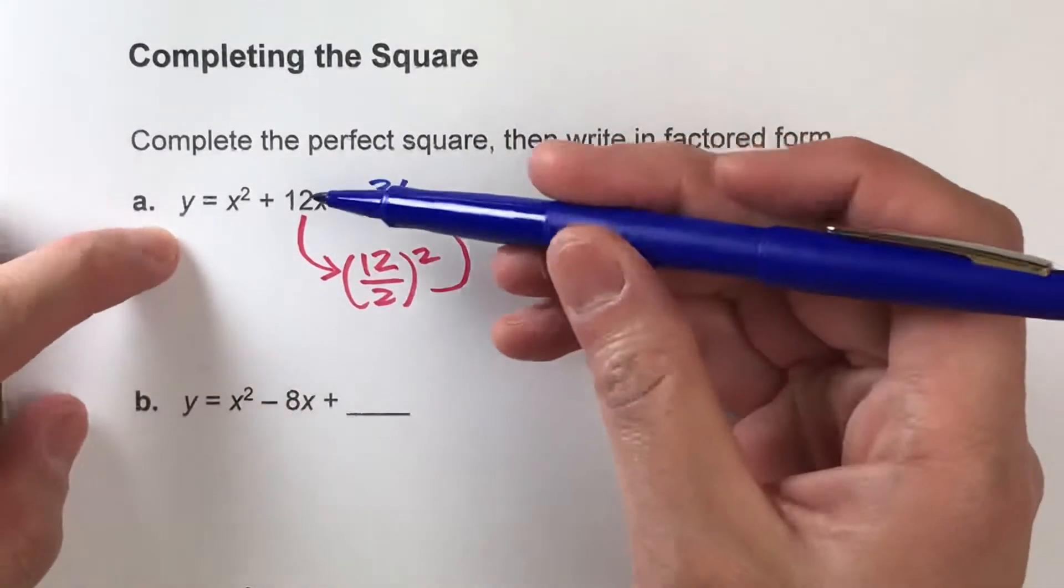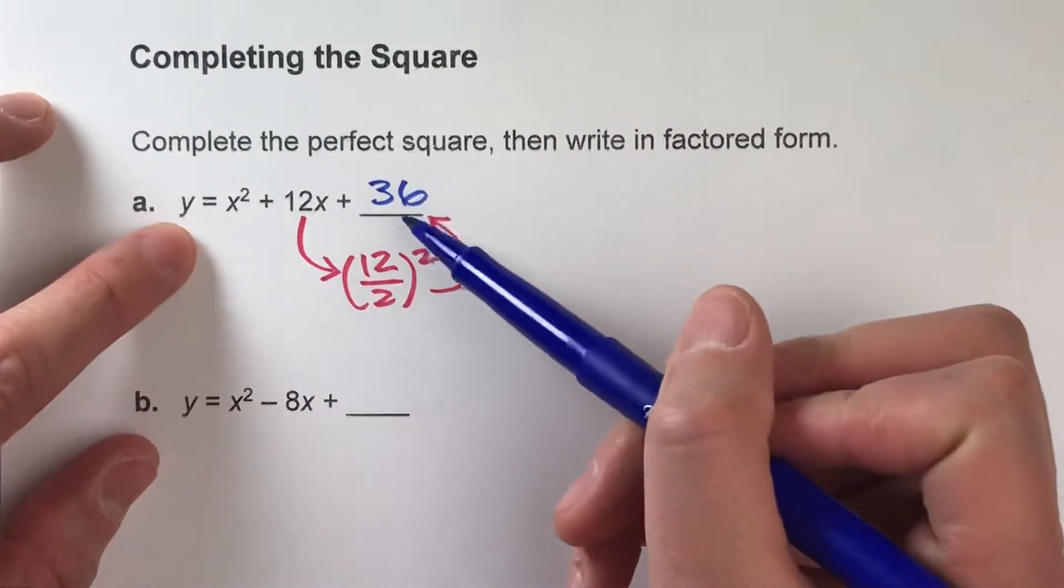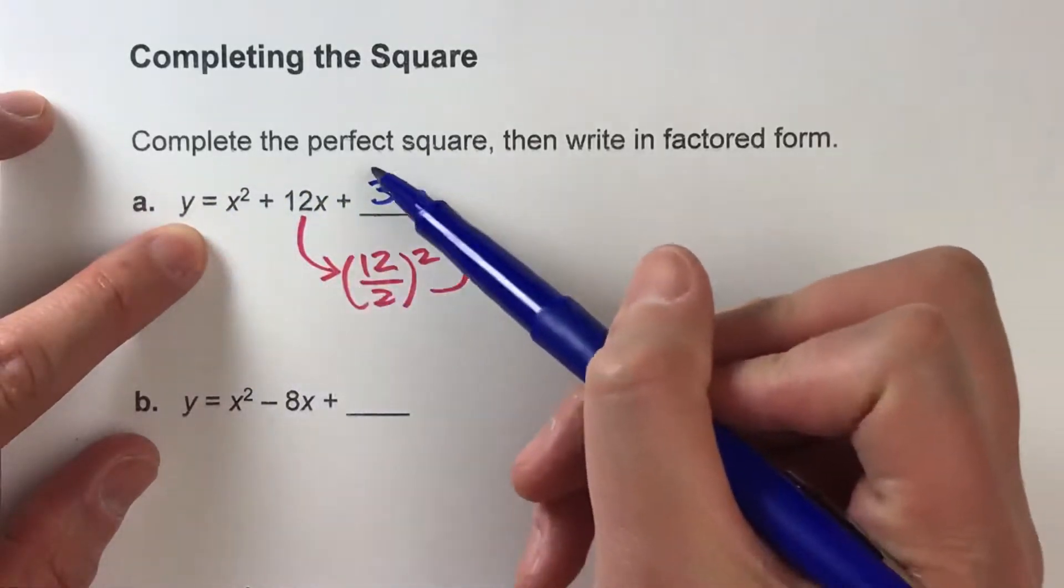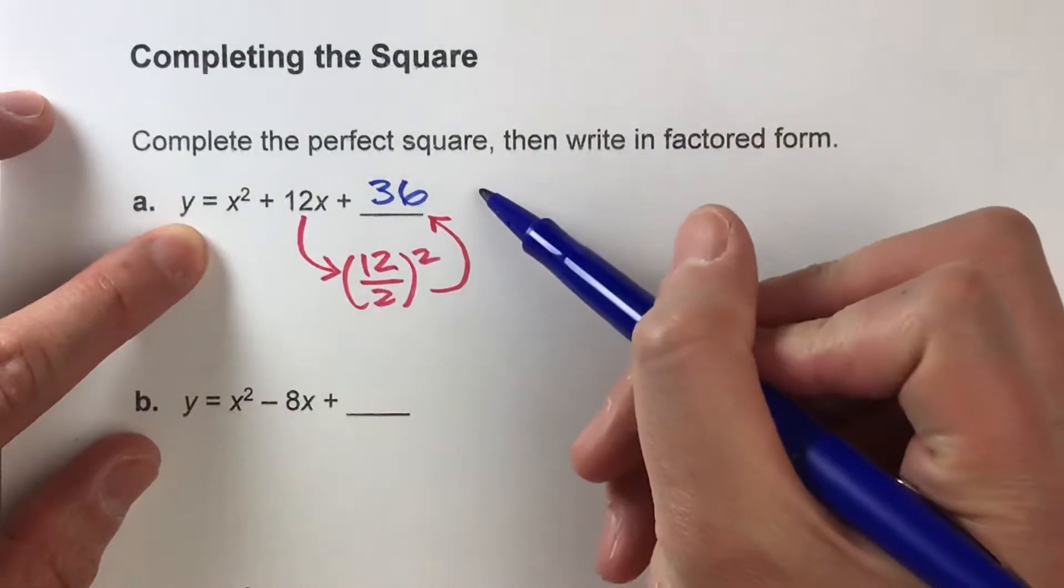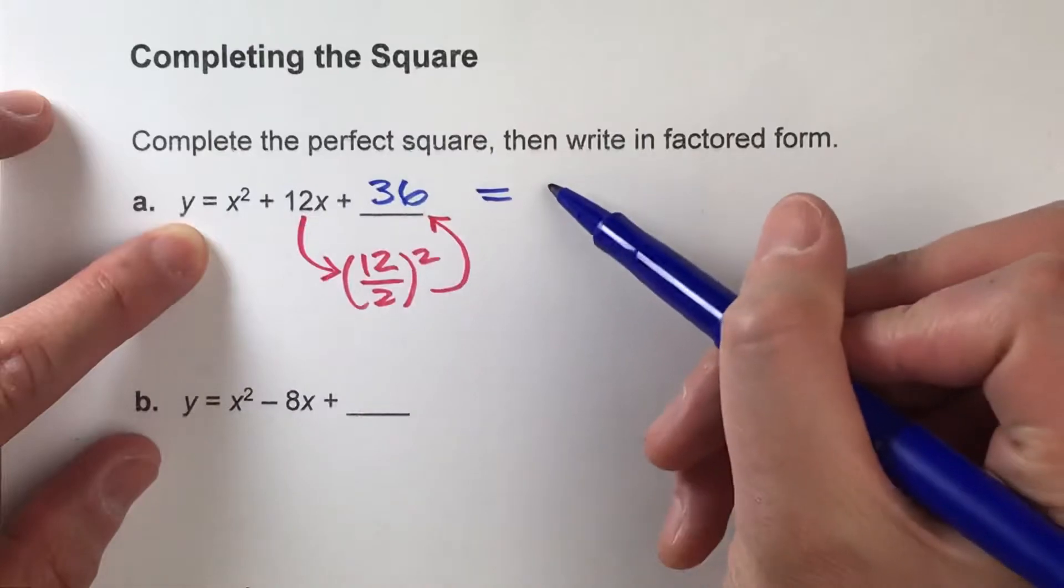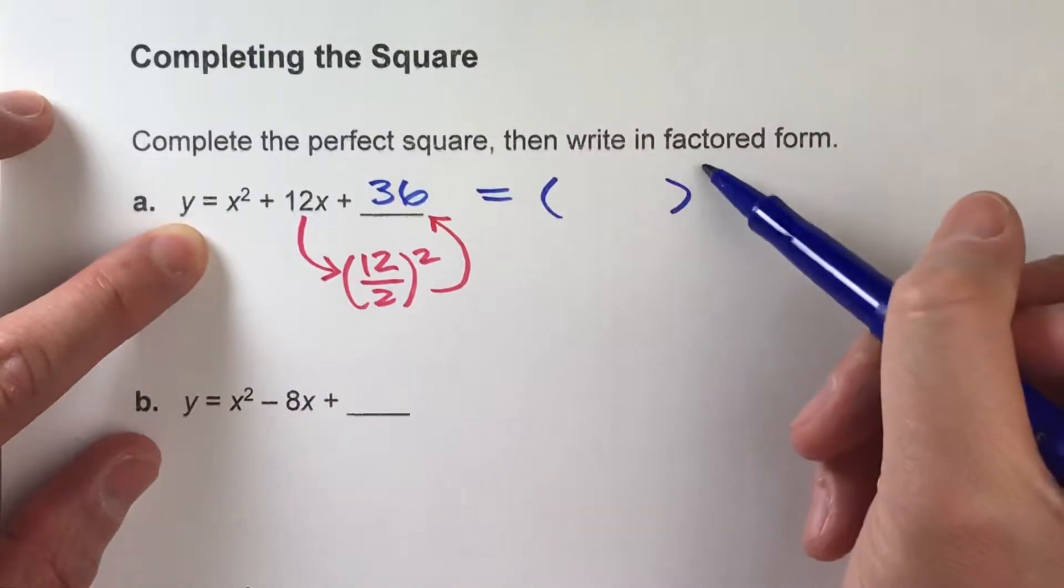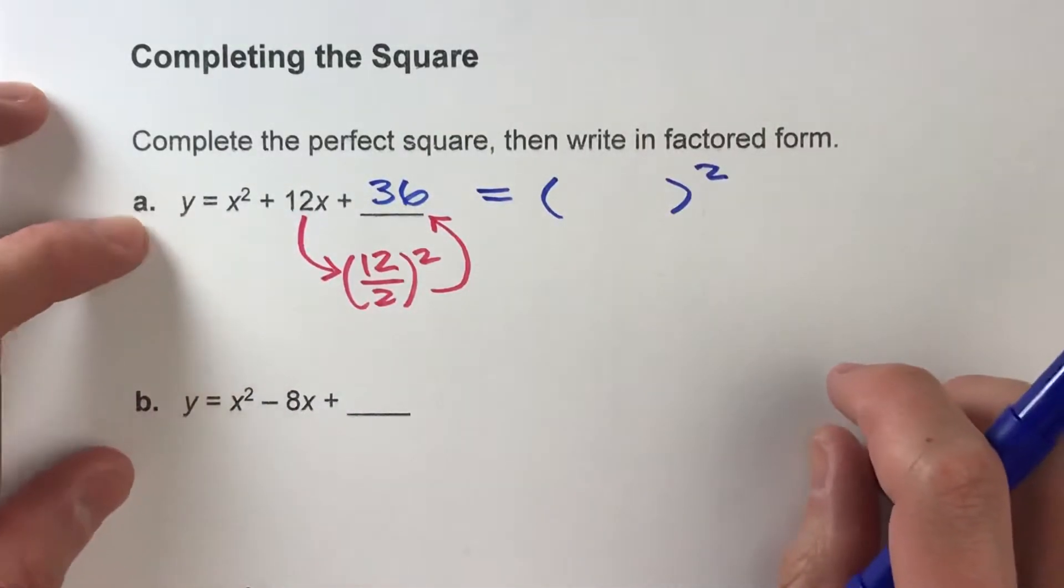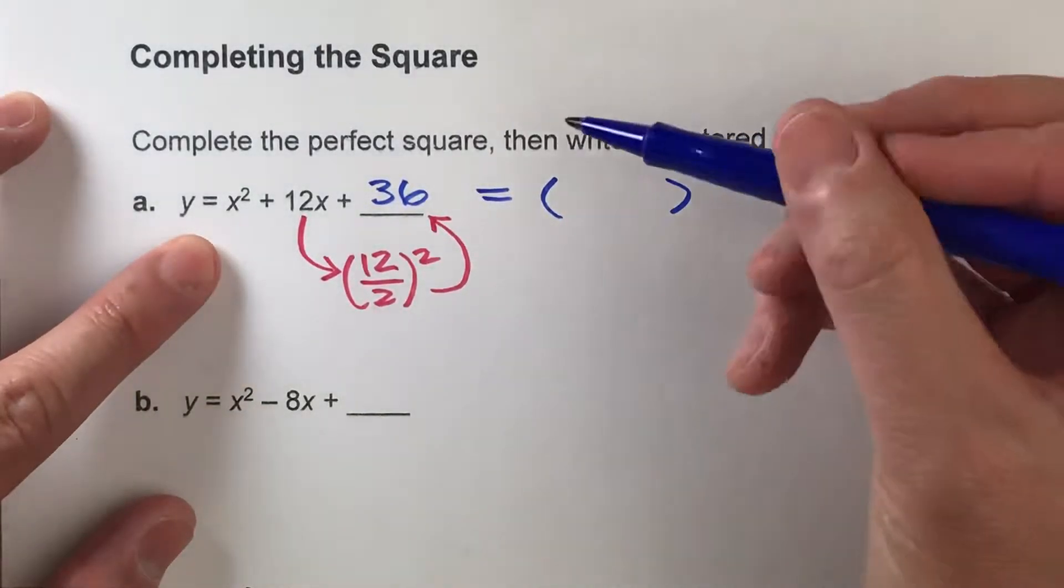Now how is that helpful? Well, by putting a 36 there, we've made this a perfect square, meaning we can write this as something squared. Now the question is, what is that something squared?